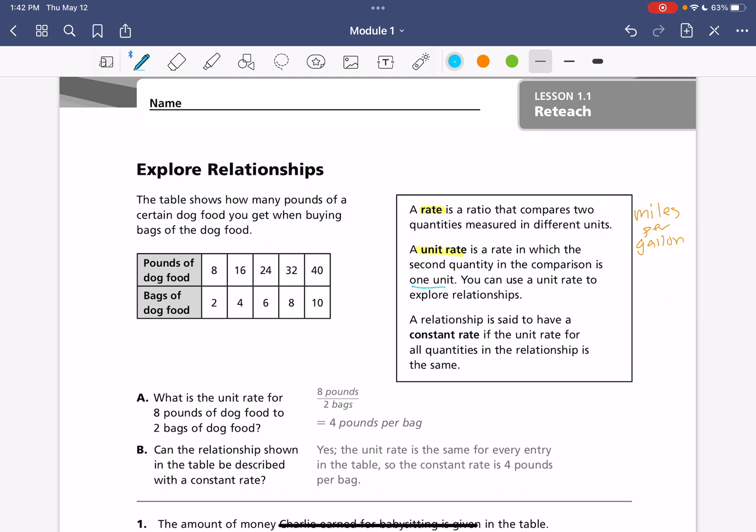And then we have constant rate. A relationship is said to have a constant rate if the unit rate for all quantities in the relationship is the same. So that is what we are going to explore today.